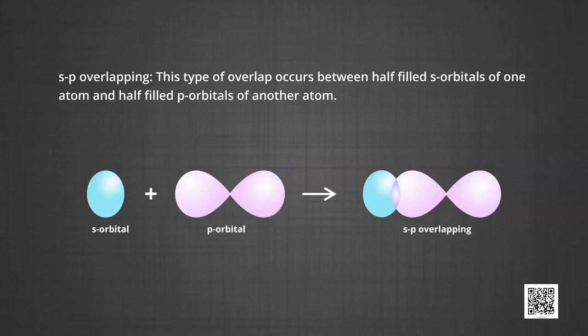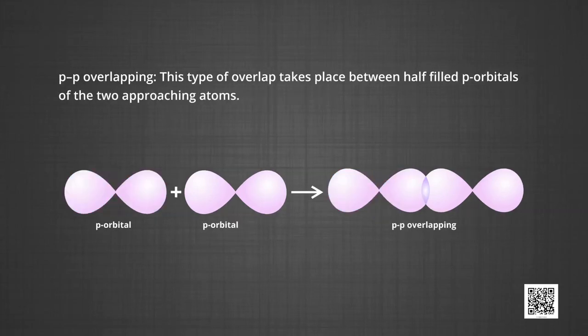In s–p overlapping, overlap occurs between half-filled s orbitals of one atom and half-filled p orbitals of another atom. The s orbital is spherically symmetrical while p orbitals are dumbbell-shaped. In p–p overlapping, this type of overlap takes place between half-filled p orbitals of two approaching atoms.